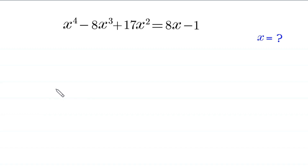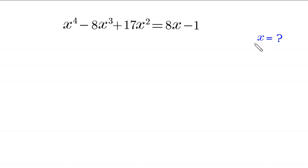Hello everyone, you are welcome to how to solve this very nice quartic equation: x to the power 4 minus 8x cubed plus 17x squared is equal to 8x minus 1. Our job is to find all possible values of x.